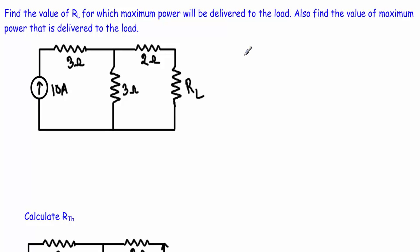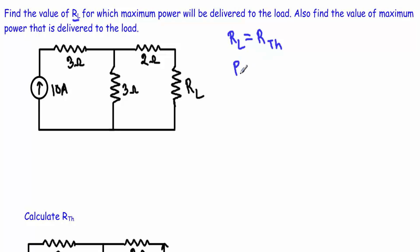When we have to solve a circuit for maximum power, we are usually asked to calculate the load resistance RL for which the load will receive maximum power, and we have to calculate the value of that maximum power delivered to the load. From the maximum power transfer theorem, we know that RL will receive maximum power when RL equals the Thevenin resistance of the circuit, and the maximum power PL max equals VTH squared divided by 4 times RTH.